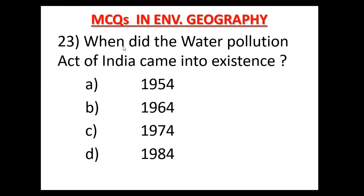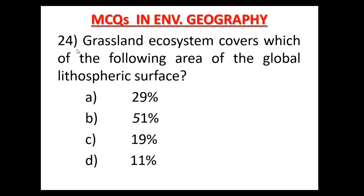Question number 23: When did the Water Pollution Act of India come into existence? Option A: 1954, Option B: 1964, Option C: 1974, Option D: 1984. In 1974, the Water Pollution Act of India came into existence. Therefore, Option C is the correct answer.